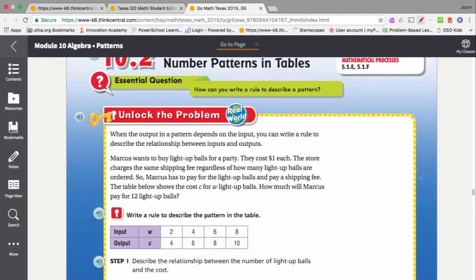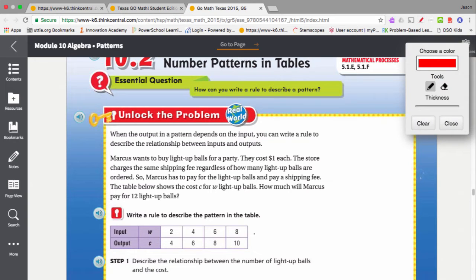So one thing we can do right away is we can try to extend this one more spot out if we want to. What if we ordered 10? What's the difference between C and W? If you notice, each time the output of the table is two more than the input of the table. So we could continue the pattern and see that the next one will be 12.